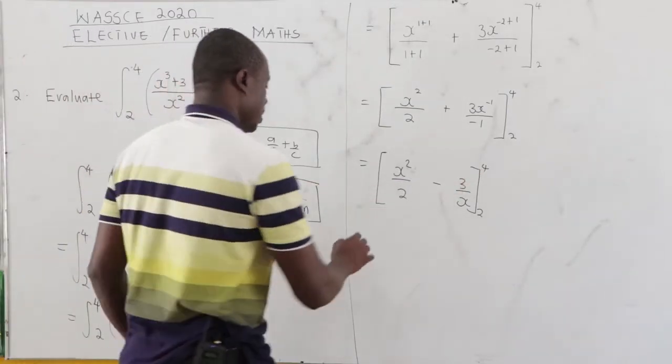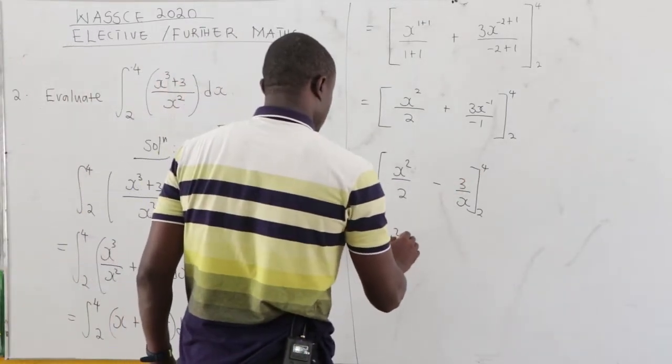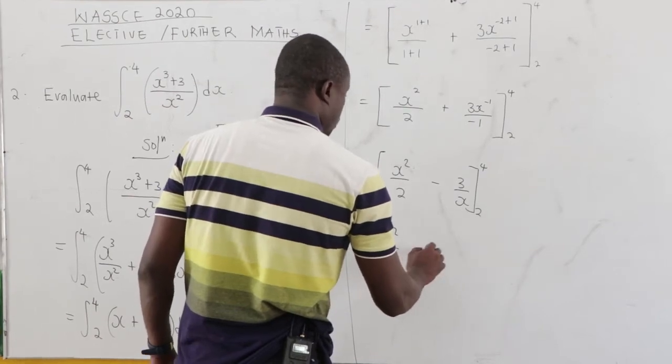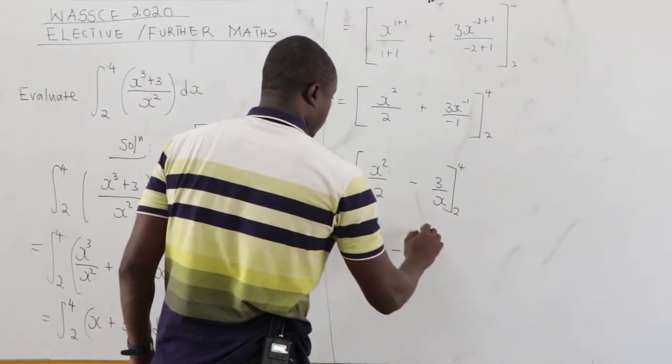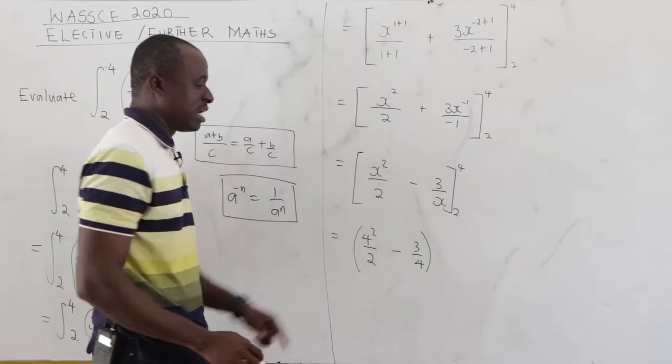Now let's substitute 4 inside. So we have 4 squared all over 2 minus 3 all over 4. Wherever we see x, we put 4, the upper limit.